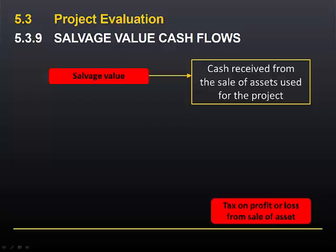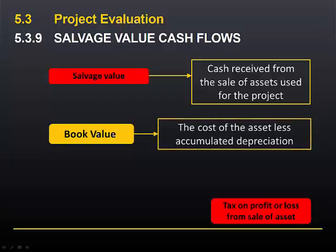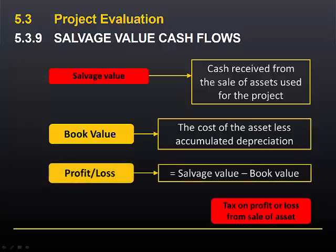In order to calculate that tax we need to remind ourselves of the definition of book value: the cost of the asset less accumulated depreciation. The examples used in the module on depreciation all involve depreciating the asset down to a book value of zero. But whether or not that's the case, we need to consider what the book value is in determining any tax. The profit or loss from the sale of an asset is equal to the salvage value minus the book value.